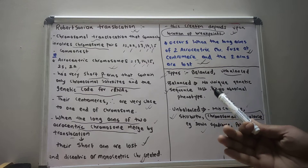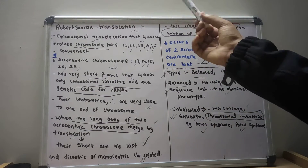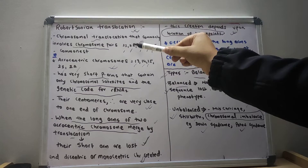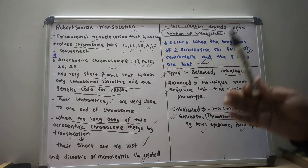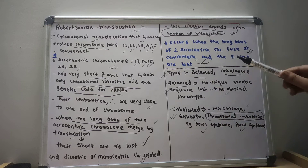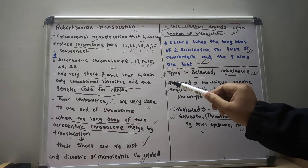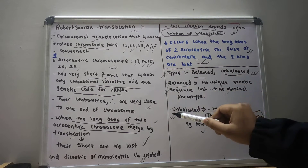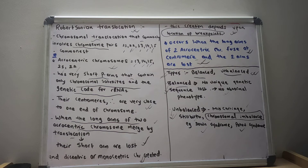So, in today's video we discussed what Robertsonian translocation means, what the acrocentric chromosomes are, how Robertsonian translocation occurs, and the different types including what happens in balanced and unbalanced Robertsonian translocation. I hope you understood this lecture. Thank you.